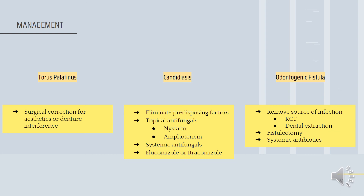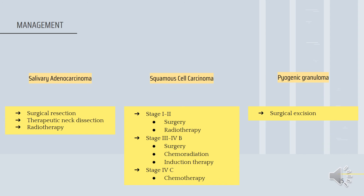For odontogenic fistula, the source of infection should be removed via root canal treatment or dental extraction, followed by fistulectomy. No systemic antibiotics are needed as it is a localized entity, but they should be considered in patients with diabetes, immunosuppression or signs of systemic infection. For salivary adenocarcinoma, surgical resection is the standard treatment. Therapeutic neck dissection is recommended for patients with clinical or radiologic evidence of cervical node metastasis. For inoperable disease, primary radiotherapy should be considered.